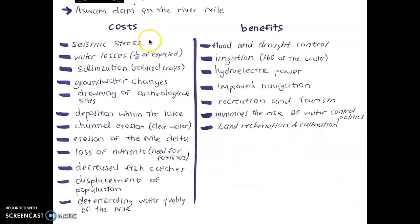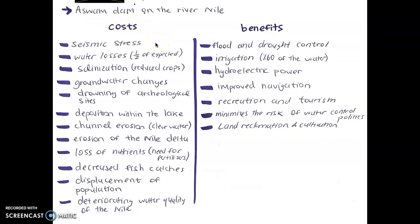The costs of dams — there are numerous costs also in the case of the Aswan Dam. So there is seismic stress. Dams allegedly do cause some earthquakes. In 1981, there was a huge earthquake thought to be caused by the Aswan Dam. But this is because as water levels in the dam decrease, so does the seismic activity.